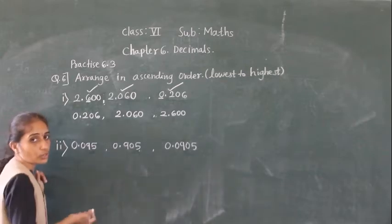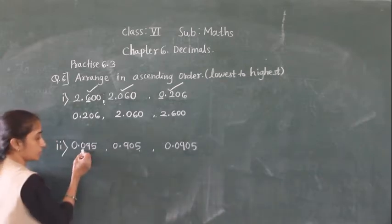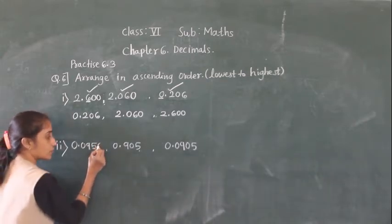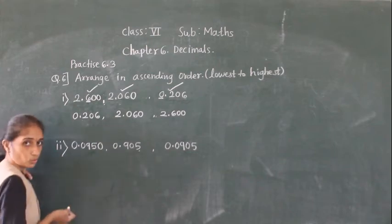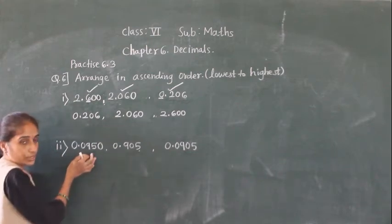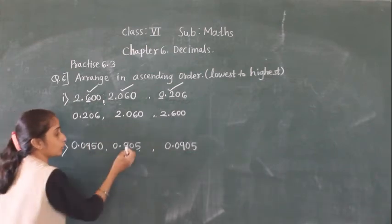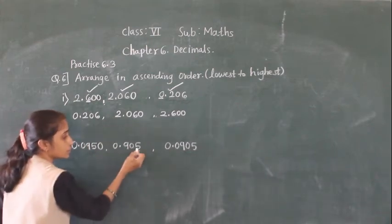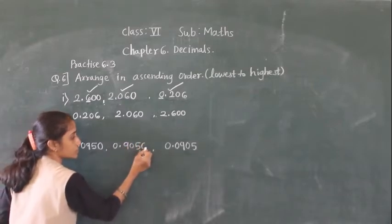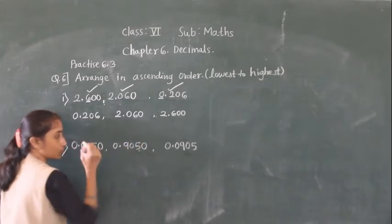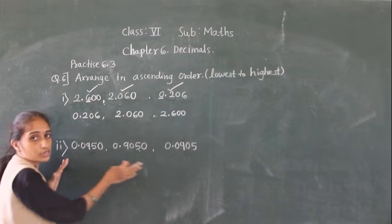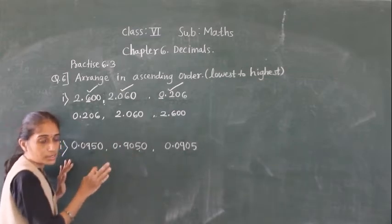So everywhere we have to make 4 digits after the decimal point. Here 3 digits are given, so add one zero. Here also 3 digits are given, so add one zero. And 0.0905 already has 4 digits.